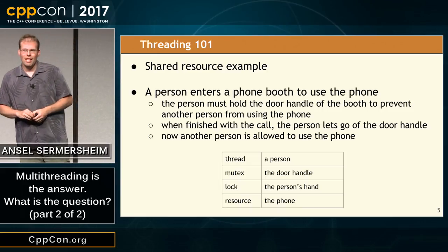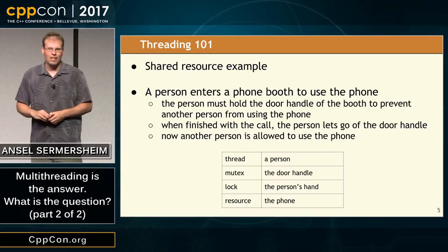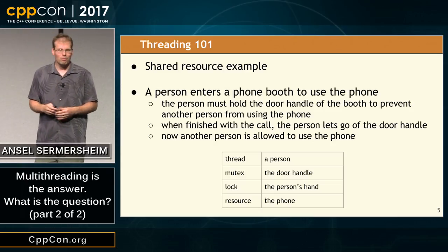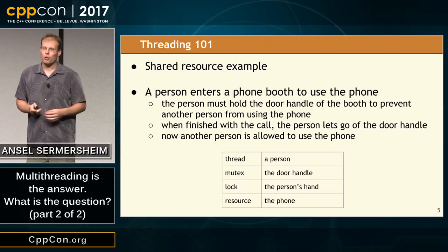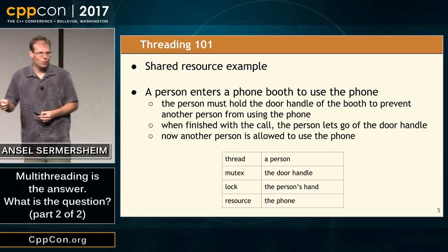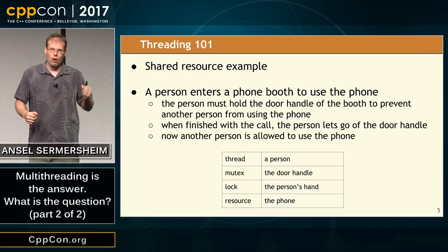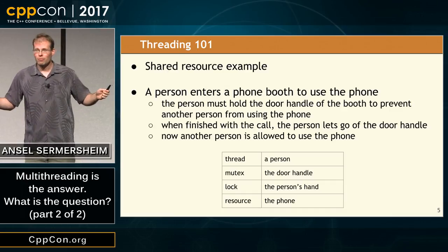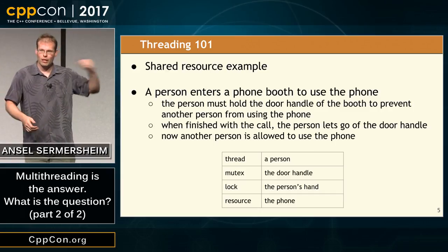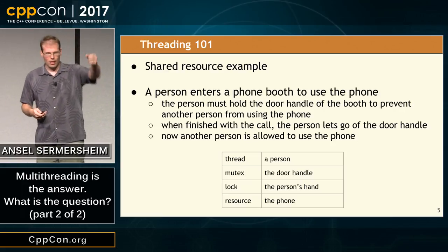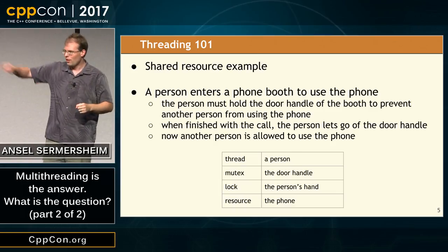Let's look at how we handle shared resources in C++11. Say we have a phone booth — if you can find one. Clearly only one person can use the phone at once, so we make a rule: in order to use the phone, you must be holding the door handle of the phone booth. This works because only one person can hold the handle. When you're finished with the call, you let go. The next person can come in. We're using the door handle as a mutex — if my hand is on this, you can't use this other object.